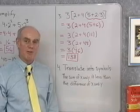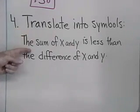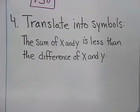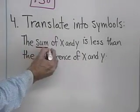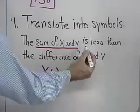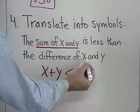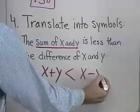Let's look at another problem here that involves a translation. Problem 4, we want to translate into symbols this expression written in English: the sum of x and y is less than the difference of x and y. So I'll start with the sum of x and y, which is x plus y. And that is going to be less than, so I'll use my less than symbol, the difference of x and y, which is x minus y.